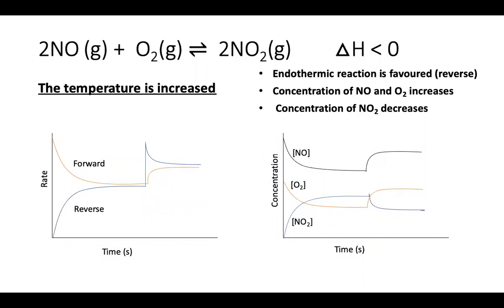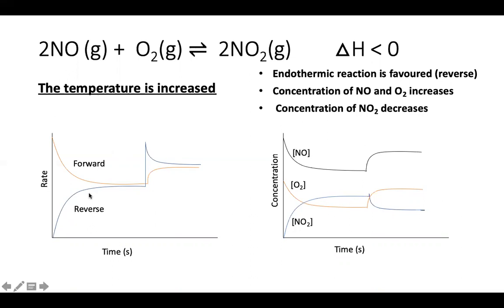If the temperature is increased, the endothermic reaction is favoured. Since the forward reaction (NO + O₂ → NO₂) is exothermic (ΔH < 0), the reverse reaction is endothermic. So the reverse reaction is favoured, and on the rate versus time graph the blue (reverse) line ends up higher than the red (forward) line.